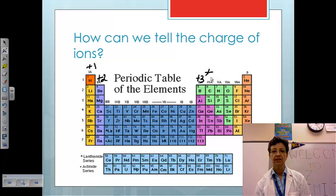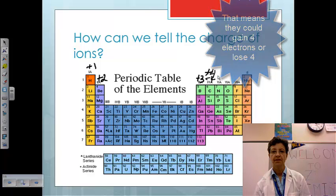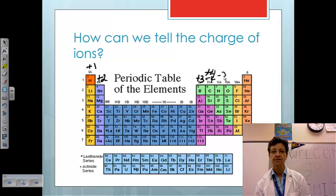These are positive four or negative four. This column form negative three ions. This one forms negative two ions, the one starting with oxygen. These form negative one. And these form no ions at all.